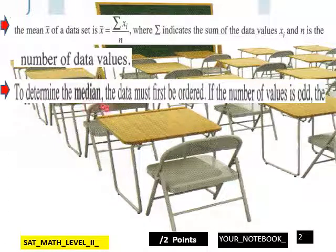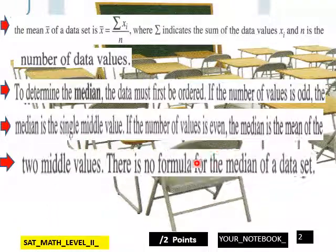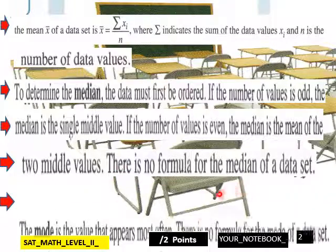To determine the median, the data must first be ordered. If the number of values is odd, the median is a single middle value. If the number of values is even, the median is the mean of the two middle values. There is no formula for the median of a data set.